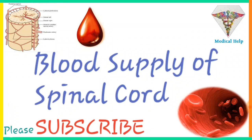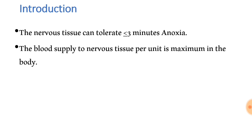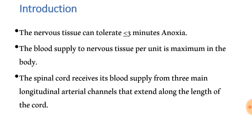Welcome to Medical Health Today. The topic is blood supply of the spinal cord. Firstly, we should remember that nervous tissue can tolerate less than or equal to three minutes of anoxia, so it is very delicate. The blood supply to nervous tissue per unit is maximum in the body. The spinal cord receives blood supply from three main longitudinal arterial channels.